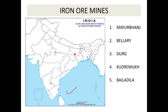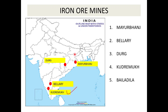To summarize: Mayurbhanj - Odisha, Bellary - Karnataka, Durg - Chhattisgarh, Kudremukh - Karnataka again, Bailadila - Chhattisgarh. These are the 5 important iron ore mines from where raw iron is extracted.